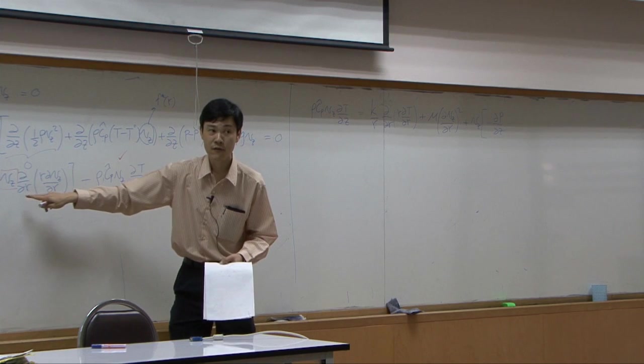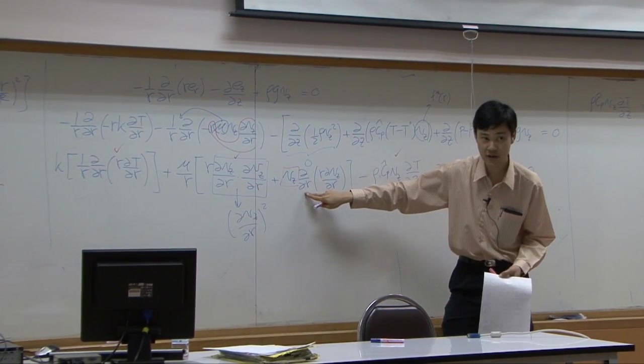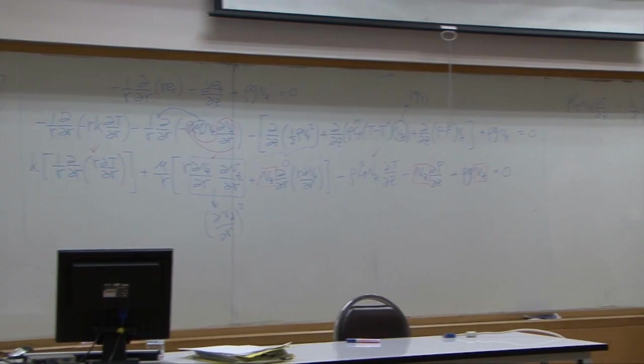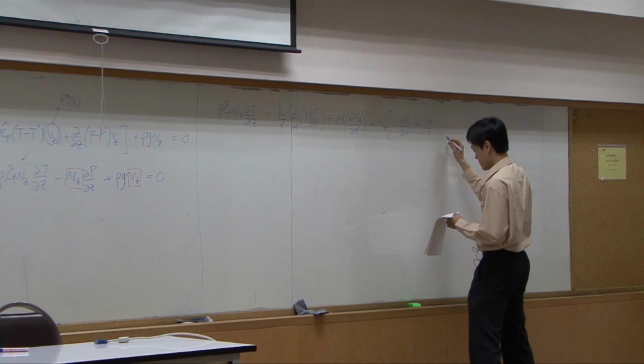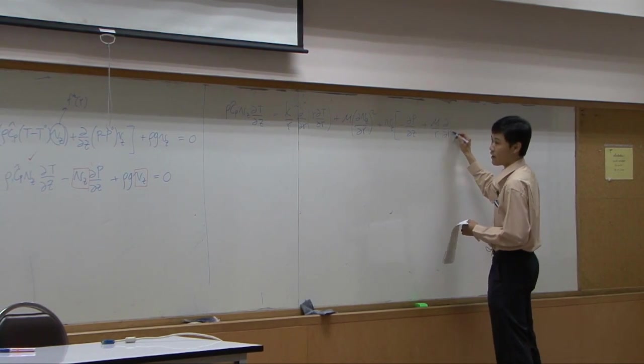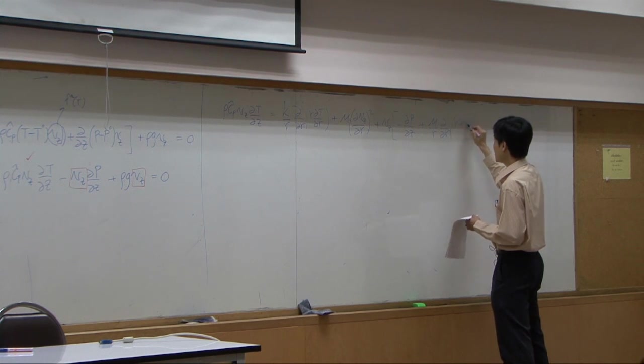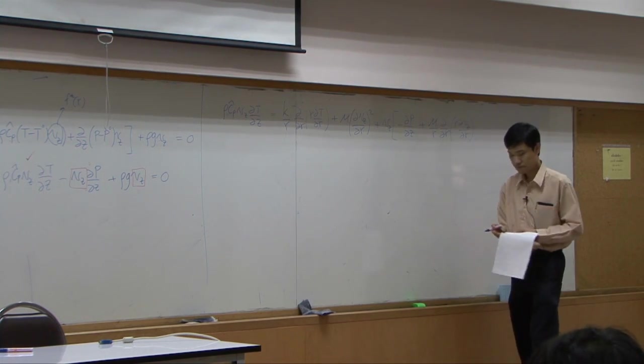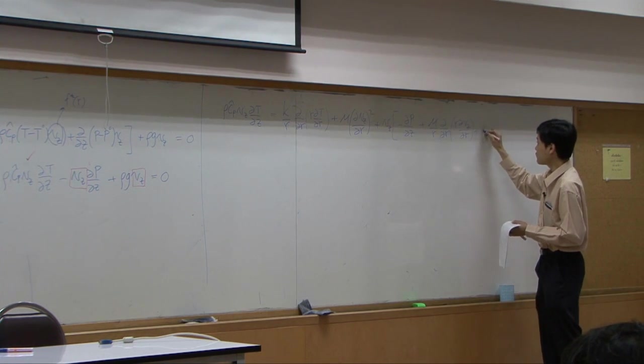Then for this term, you multiply mu over r over here. You get mu over r d by dr of r dVz by dr. And then the last term is rho g.